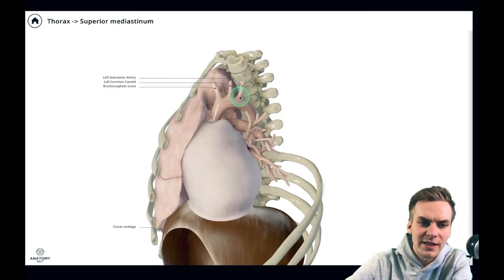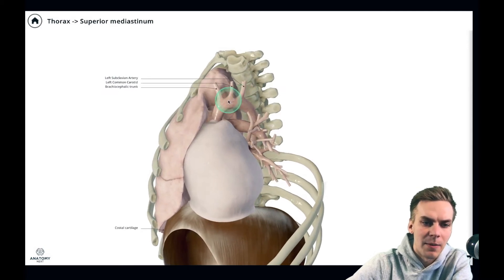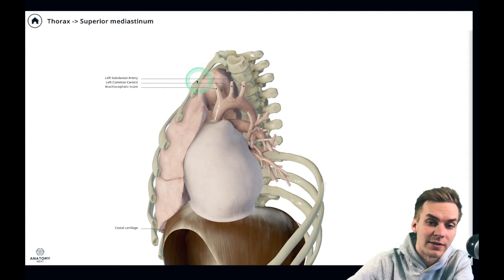Please note that we don't see a right common carotid artery coming off the aorta and that is because the right common carotid artery and the right subclavian artery come off the brachiocephalic trunk.